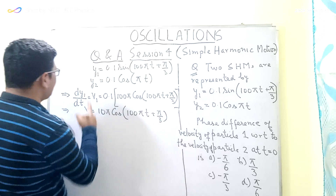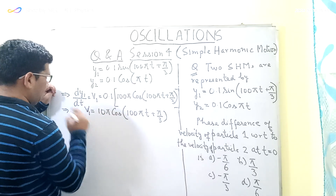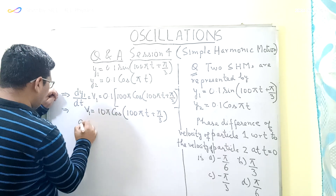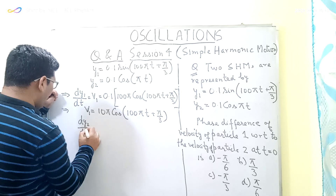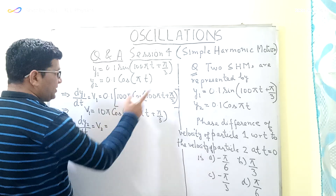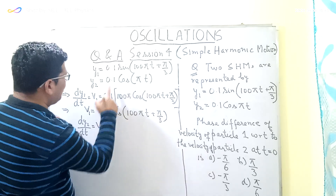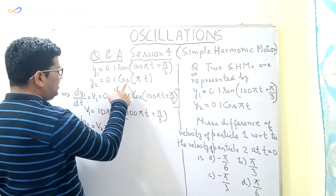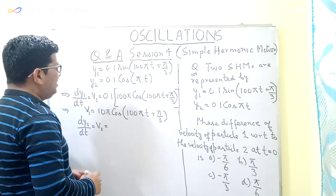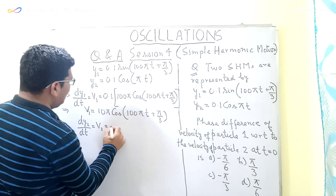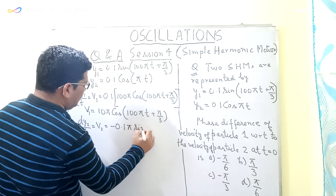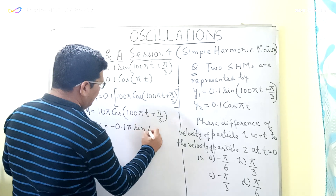So v1 is equal to 10π cos(100πt + π/3). Now let us differentiate the second equation: y2 = 0.1 cos(πt). From this second equation, dy2/dt gives the instantaneous velocity of particle 2, which is executing simple harmonic motion. This is equal to 0.1, and the differentiation of cos θ is minus sin θ, so this gives minus 0.1π sin(πt).